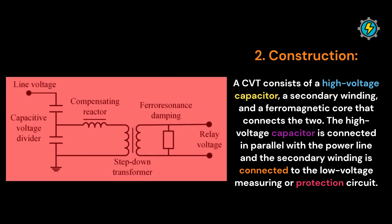Construction: A CVT consists of a high-voltage capacitor, a secondary winding, and a ferromagnetic core that connects the two. The high-voltage capacitor is connected in parallel with the power line, and the secondary winding is connected to the low-voltage measuring or protection circuit.